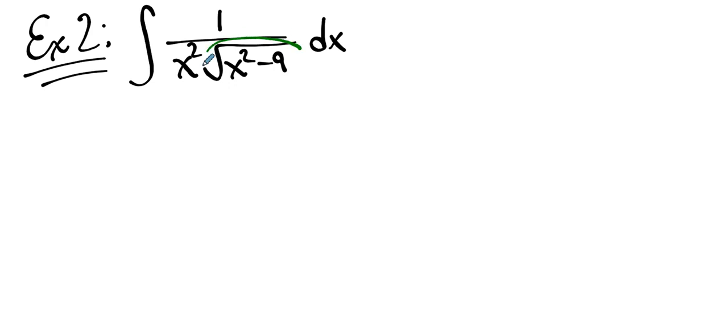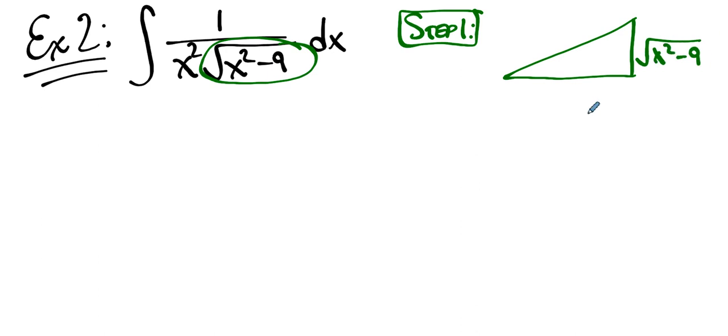Now, this is a dead giveaway that we're doing integration by trig substitution because this is a square root of x squared minus a number. And so in step one, we build a right triangle, one of whose sides is that side. It's got a minus, not a plus. So it's got to be one of the legs. And the other two sides are the square roots of those numbers. x is bigger than three.